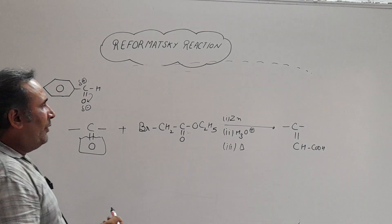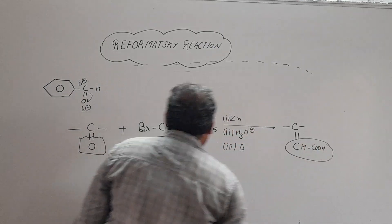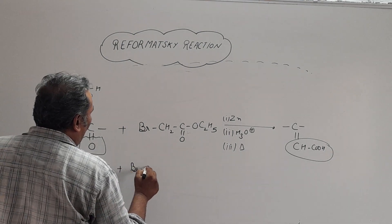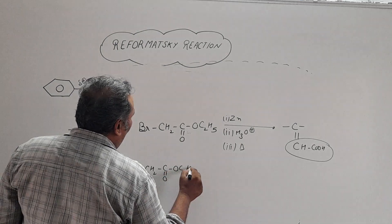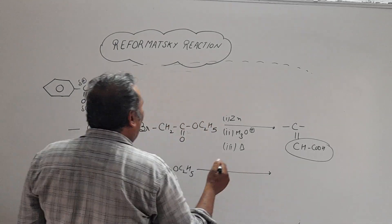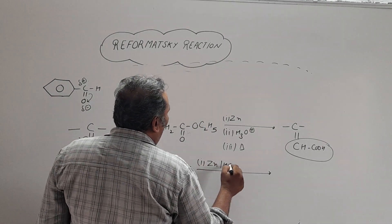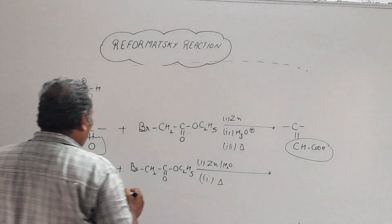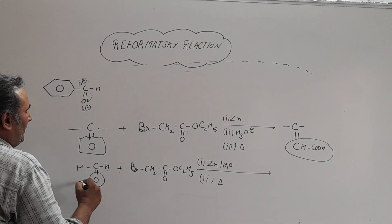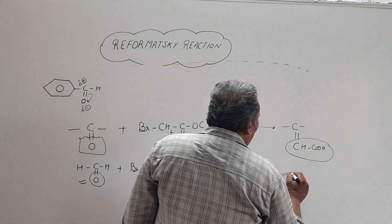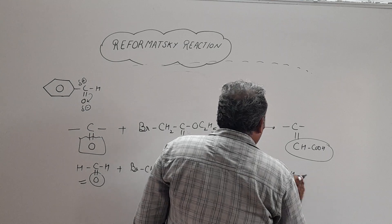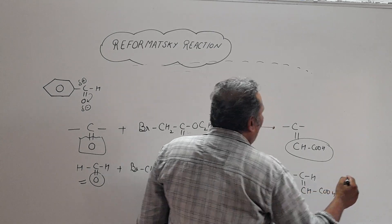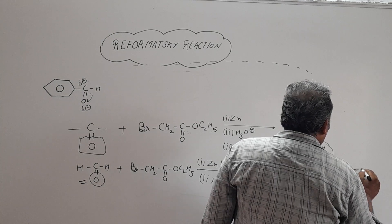For example, take HCHO (formaldehyde) reacting with CH₂(=O)-O-C₂H₅ as the alpha-haloester, in the presence of zinc, then water, then heating. Our final product: we remove the oxygen from the carbonyl and replace it with =CH-COOH. So the final answer is CH₂=CH-COOH, which is acrylic acid.